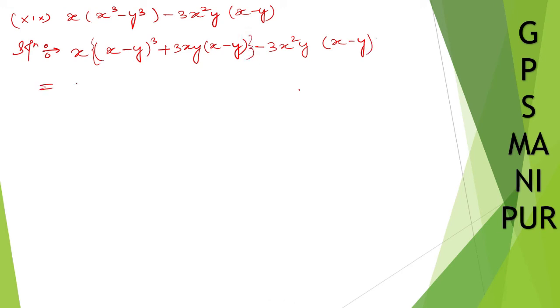Now, take x common. If you take x common, then it will be, so what's left out is x minus y whole cube plus 3xy x minus y. x goes out common. So what's left out will be minus 3xy x minus y.